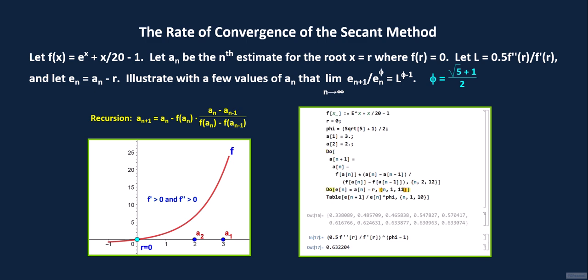For the do loop for e sub n, n will go all the way up to 13. For the table command, n will go all the way up to 12. These were the first 10 values of e sub n that we had found earlier. The last value was 0.633074.